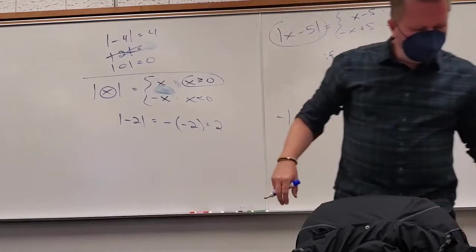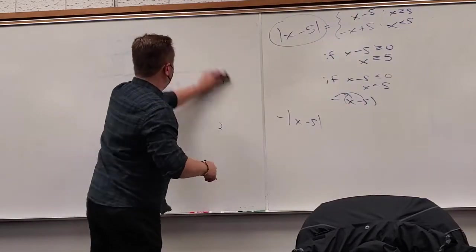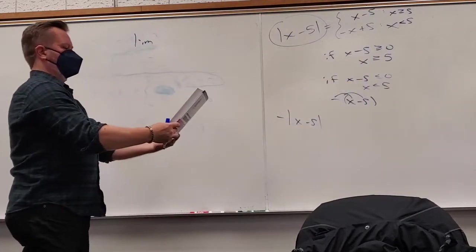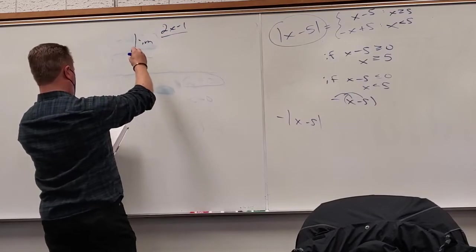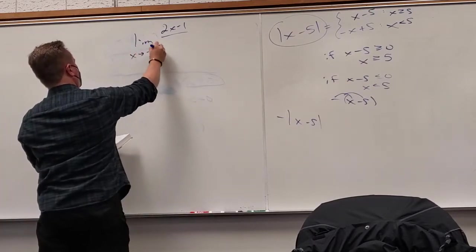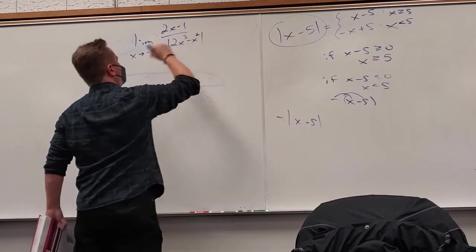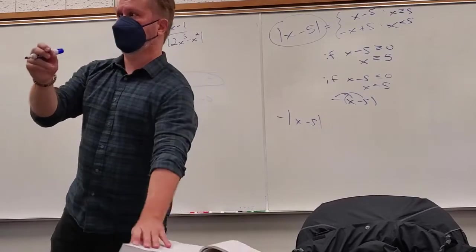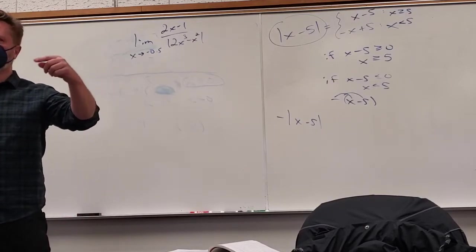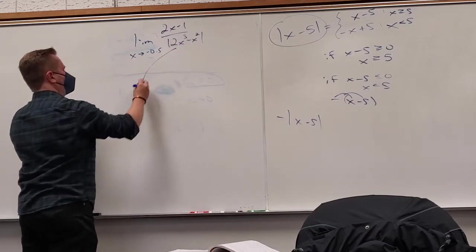Let's look at problem 43. The denominator is pretty disgusting — but it's not as bad as you think. What should you immediately think to do with it? Factor. Ignore the absolute value for a second because the inside is complicated — factor out x squared.